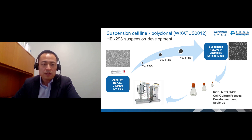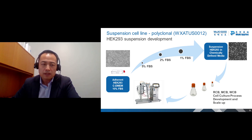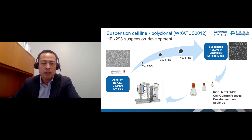The Xlenti suspension cell line was suspension-adapted from adherent HEK293 cells into fully chemically defined medium. The cells were then subjected to stability analysis, recovery analysis, and lentiviral production testing. The cell line showed robust cell growth and high yield in shaker flask and large bioreactor systems. Research cell bank, master cell bank, and working cell bank have been generated. Master cell bank and working cell bank have been CGMP-banked and released.